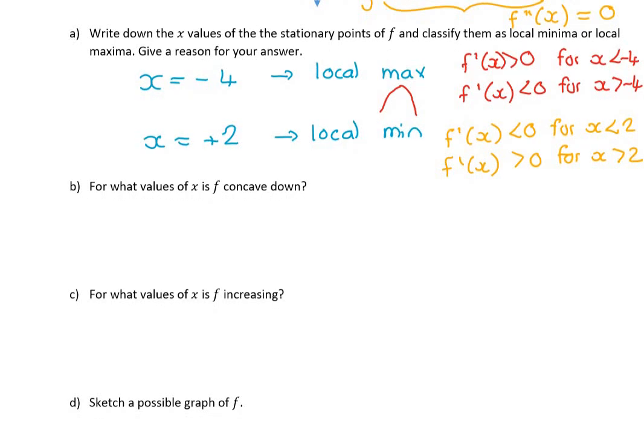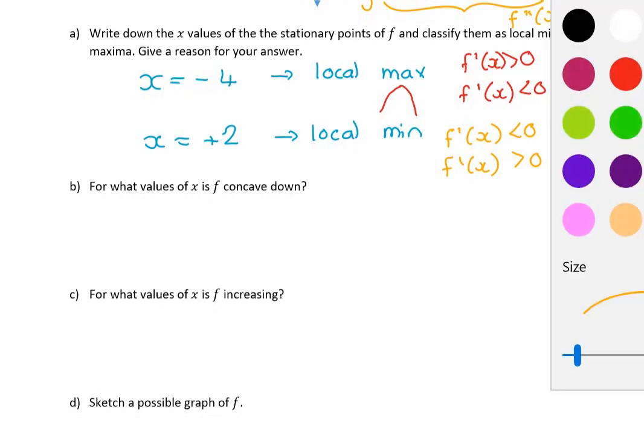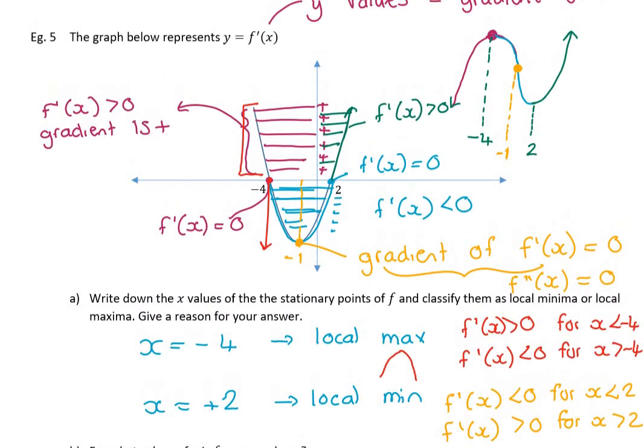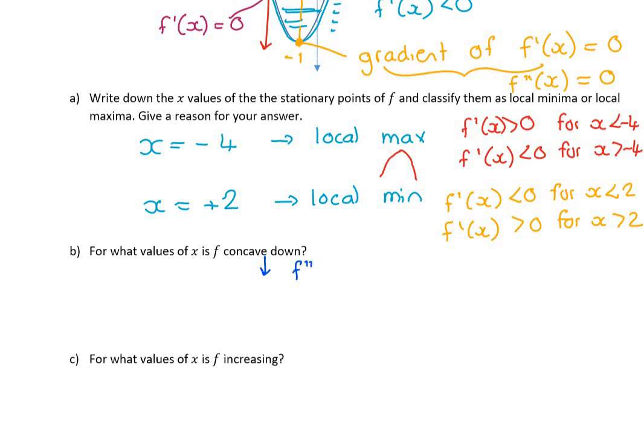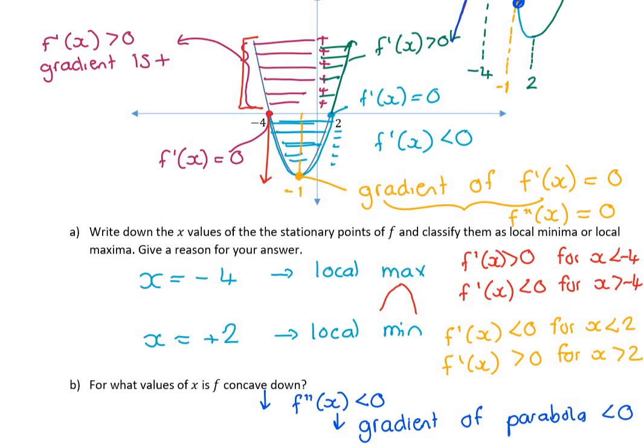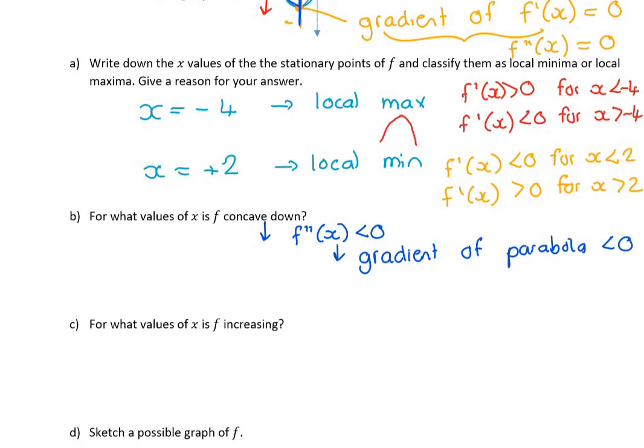So on to the next one. For what values of x is f concave down? What's lovely is because they didn't ask for an explanation, I could just look at my graph that I have drawn, and I can see that concave down is that part. So my answer is x < -1. What you could do is also think about what concave down means. Concave down means your second derivative is negative. You've drawn a graph of the first derivative, so the second derivative is the gradient of this parabola. So basically, you're asking me where the gradient of my parabola is negative.